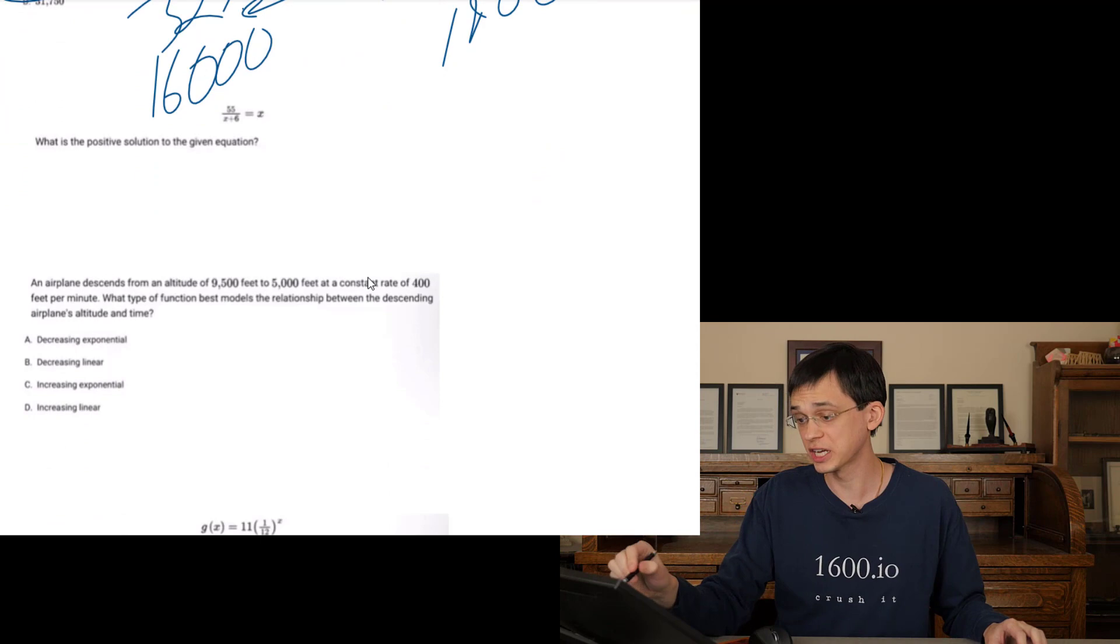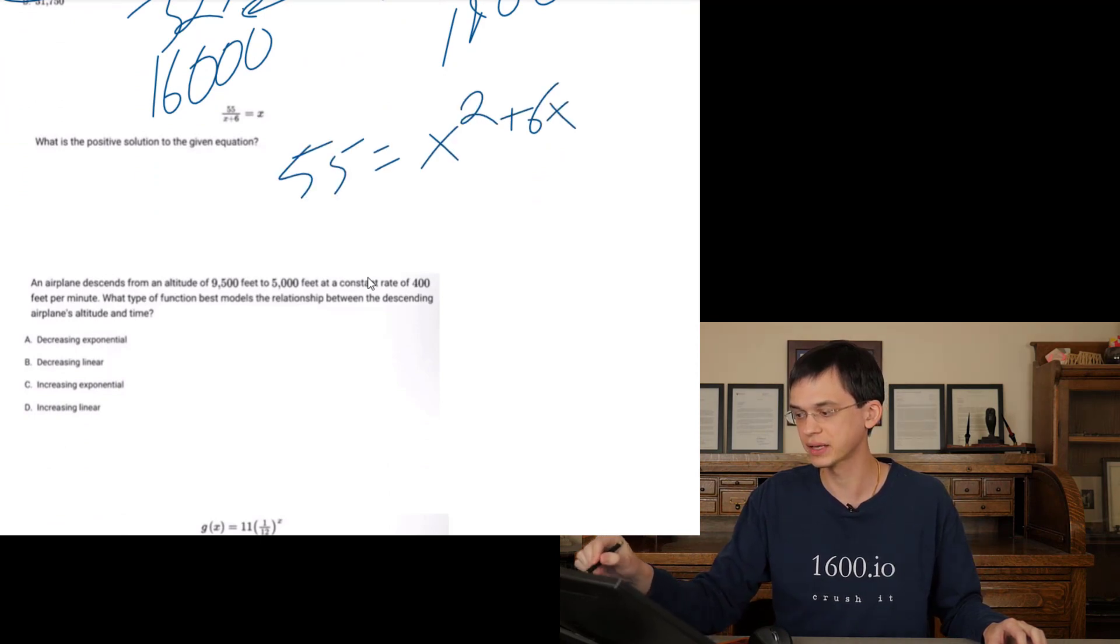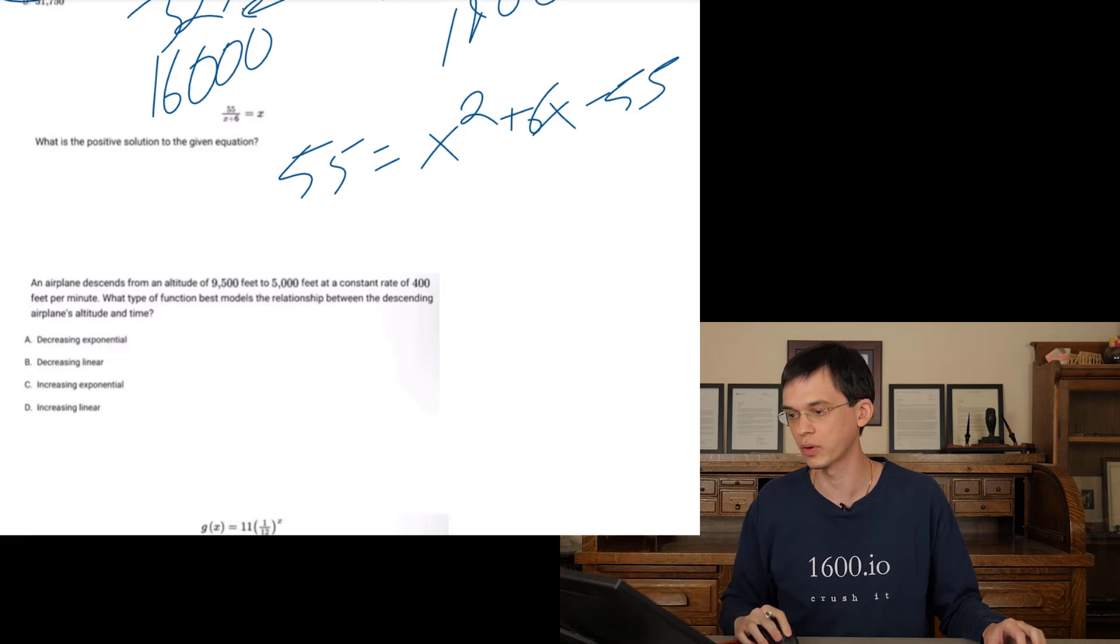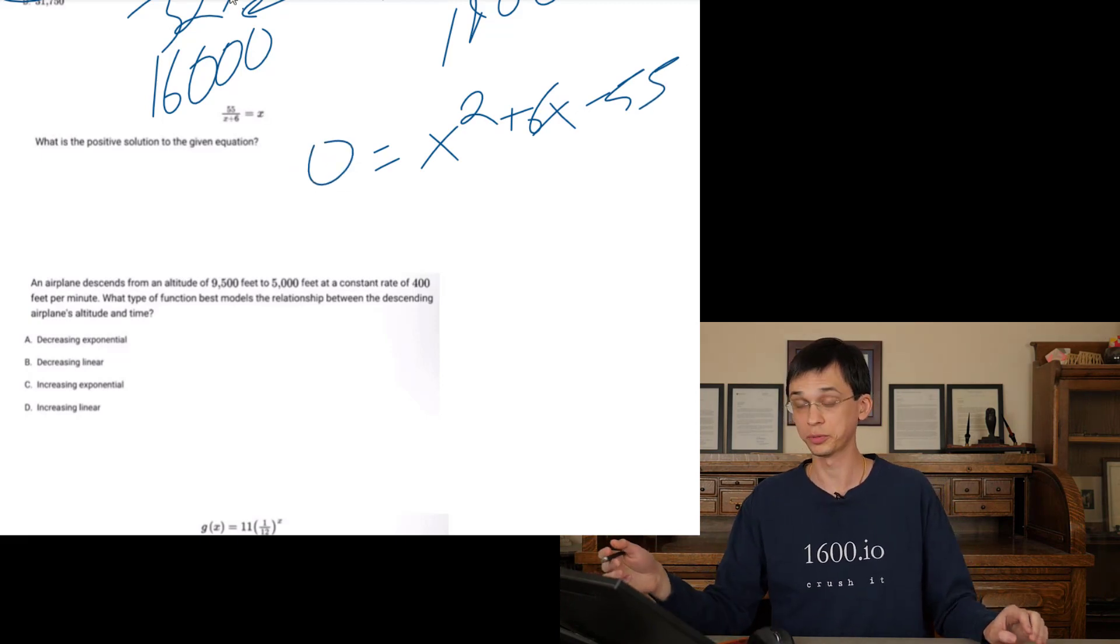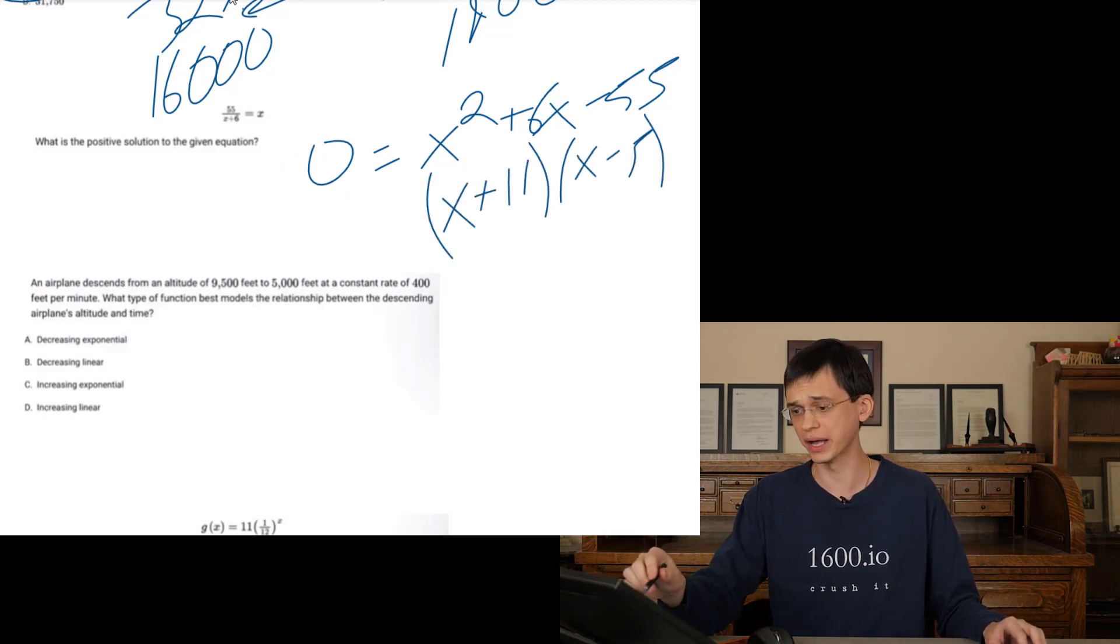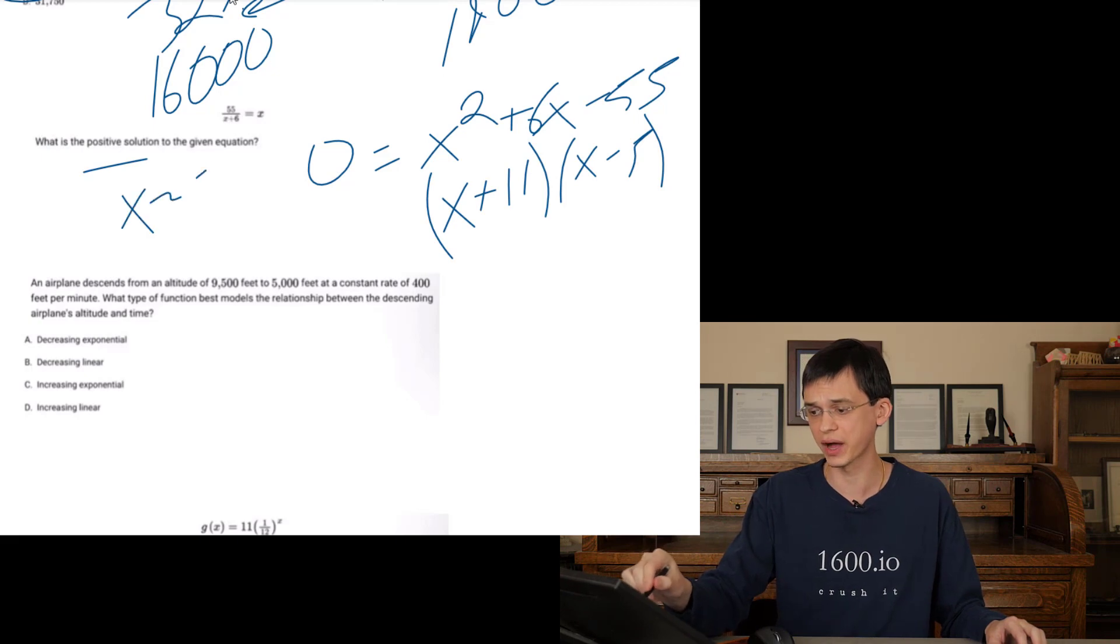55 over X plus 6 equals X. Multiply both sides by X plus 6. So we have 55 equals X squared plus 6X. And let's subtract the 55 from both sides while we're at it. So now we have a nice quadratic. We factor it. Two numbers multiplied by negative 55 out of the 6 are going to be X plus 11 and X minus 5. The only positive solution here is going to be X equals 5.